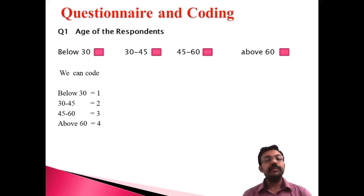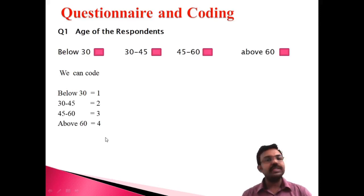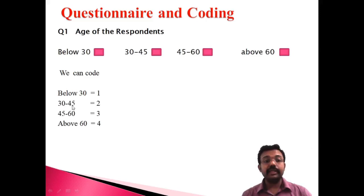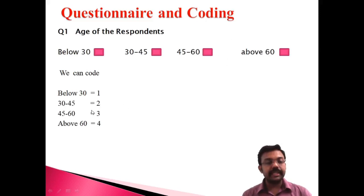Suppose a respondent clicks 45 to 60 — that is code 3. If they click above 60, that is code 4. These are the coding formats. For analysis, each question must be coded. Below 30 is 1, 30 to 45 is 2, 45 to 60 is 3, and above 60 is 4. If a respondent selects 30 to 45, that means 2; selecting 45 to 60 means 3; above 60 means 4. As a researcher you must be familiar with coding elements for analysis.